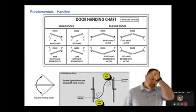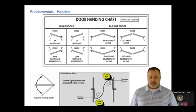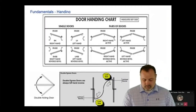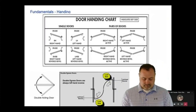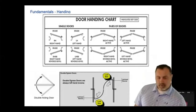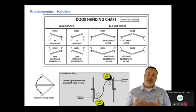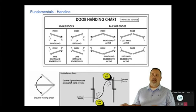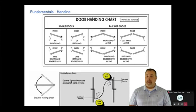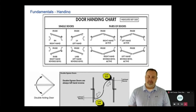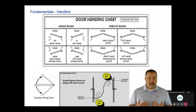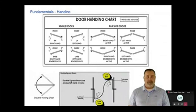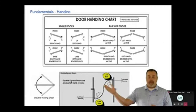Prior to hanging the opening, you need to understand the hand of that door. A lot of people have different ways to hand an opening. What I do is take a look at the outside of a room — the secure side, or the side that takes a cylinder — and look at what side the hinges are on. If the hinges are on the right-hand side and the door swings away from me, I call that a right-hand door.